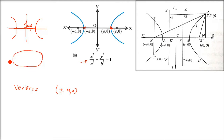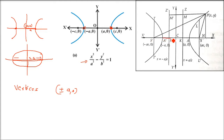If you remember when we talked about the ellipse, we said we have a coordinate axis and from one end to the other that is the major axis, and there is also a minor axis. Here we change the terminology a bit: from A' to A, the axis from one vertex to the other, is called the transverse axis.